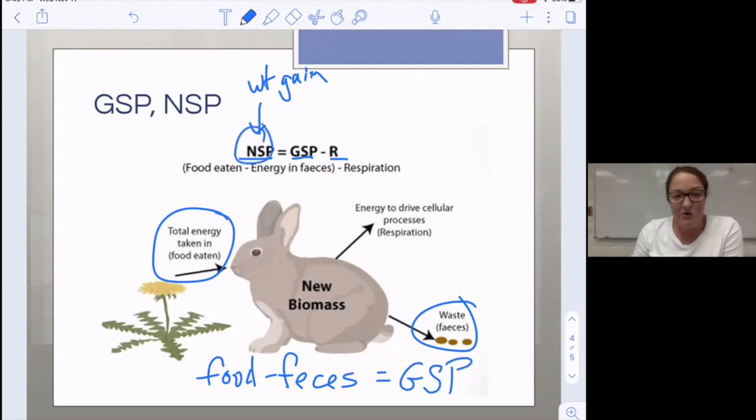Net secondary productivity can also be easily measured as the weight gain of the animal.